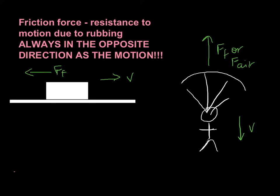We have the friction force. In order to have friction, you've got to be touching something, and it always goes in the opposite direction you're moving — it's going to slow you down. So if I'm moving to the right, then my friction force is going to be pointed to the left. Notice it's still F with a little f — FF means friction force.